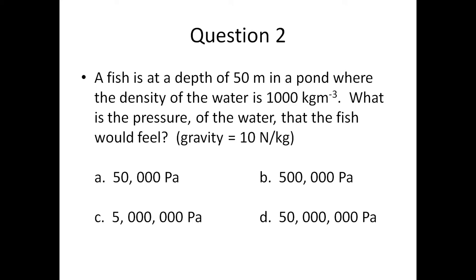Gravity is equal to 10 newtons per kilogram. A: 50,000 pascals, B: 500,000 pascals, C: 5 million pascals, and D: 50 million pascals.